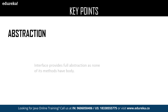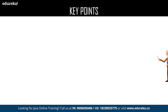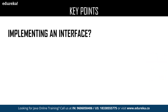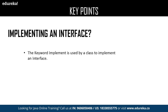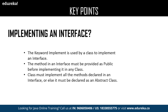The major key advantage of interface is abstraction because none of the methods declared in an interface have a body. The next key point is implementing an interface. The keyword 'implements' is used in a class to implement the methods of an interface. The method in an interface must be provided with the access modifier public. By default, the methods declared in an interface are also considered as public. A class must implement all the methods declared in an interface, or else it must be declared as an abstract class.